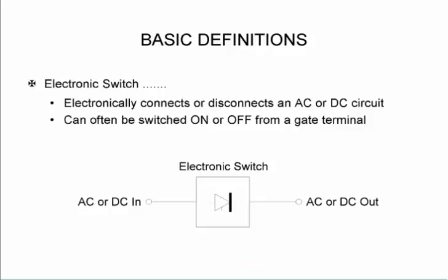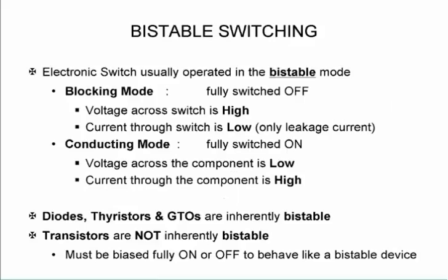The electronic switch is something that electronically connects or disconnects an AC or DC circuit, and it can often be switched on and off from a gate terminal. The power electronic devices that we use will be operated in a bistable mode, either blocking which means it's fully switched off or conducting when it's fully switched on.